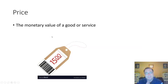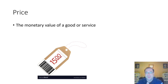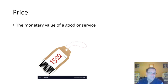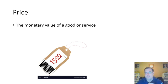Price is pretty much — short definition — the monetary value of a good or a service. You go to the store, something is $15, something is $20, something is $19.99. That is the monetary value placed on that good or service, whatever it may be.